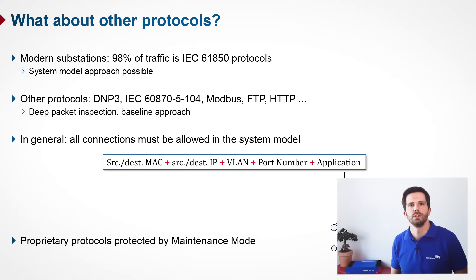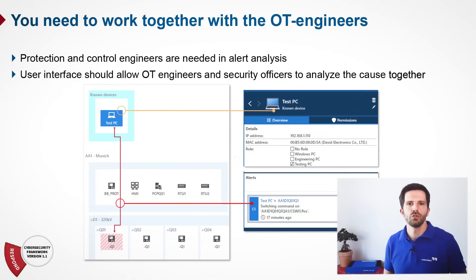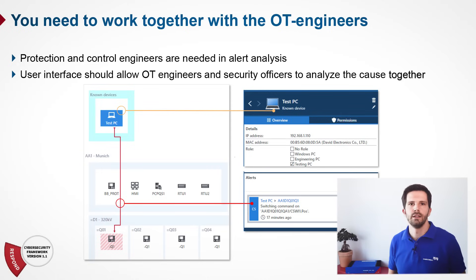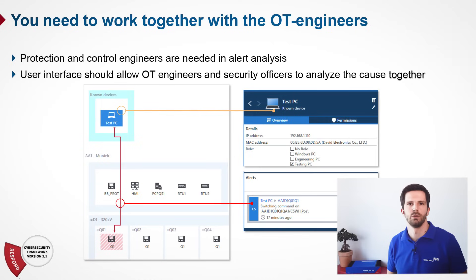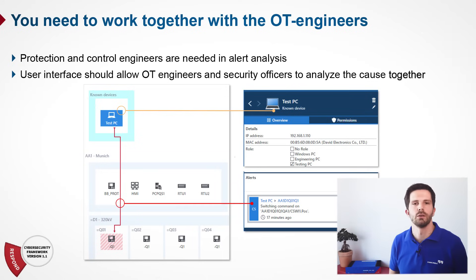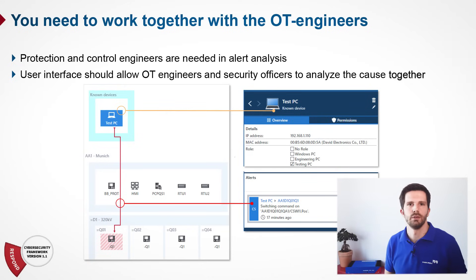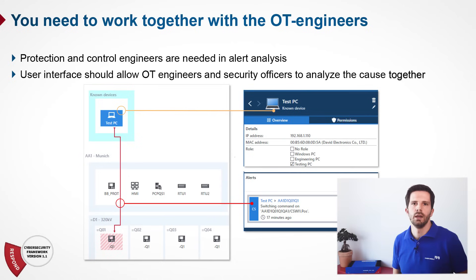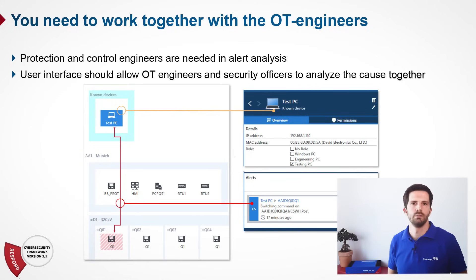An important point is that the IDS alarm display needs to be accessible for OT engineers, because protection and SCADA engineers are needed in the analysis of alert causes and in the response process. With Station Guard, the user interface is designed so that OT engineers, such as protection and control engineers, immediately feel comfortable, using a graphical diagram very close to the single-line diagram of the substation. As you can see in this screenshot, IDS alarms are depicted graphically in the system diagram — for example, as a red arrow coming from a test PC in feeder number one.